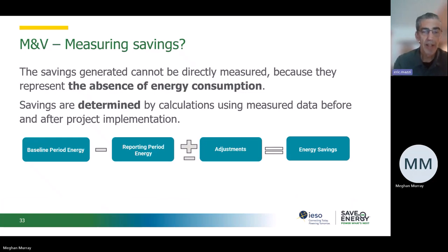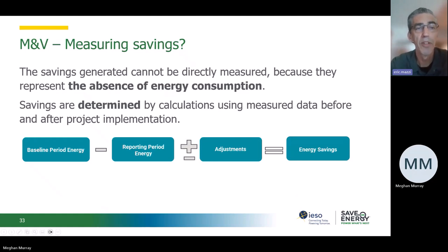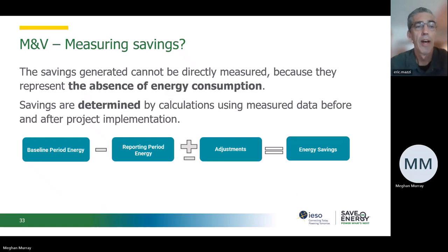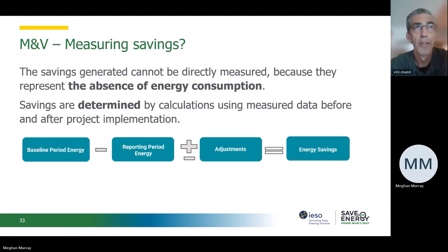Let's get into M&V methods and best practices. In principle, you can't measure energy savings — it's the absence of energy consumption. So savings are 'determined' — that's the language chosen in the IPMVP protocol. First, you quantify the baseline period energy, your post or reporting period energy, and very importantly, there's almost always the need to do adjustment because conditions change from baseline to reporting period, like outdoor air temperature.